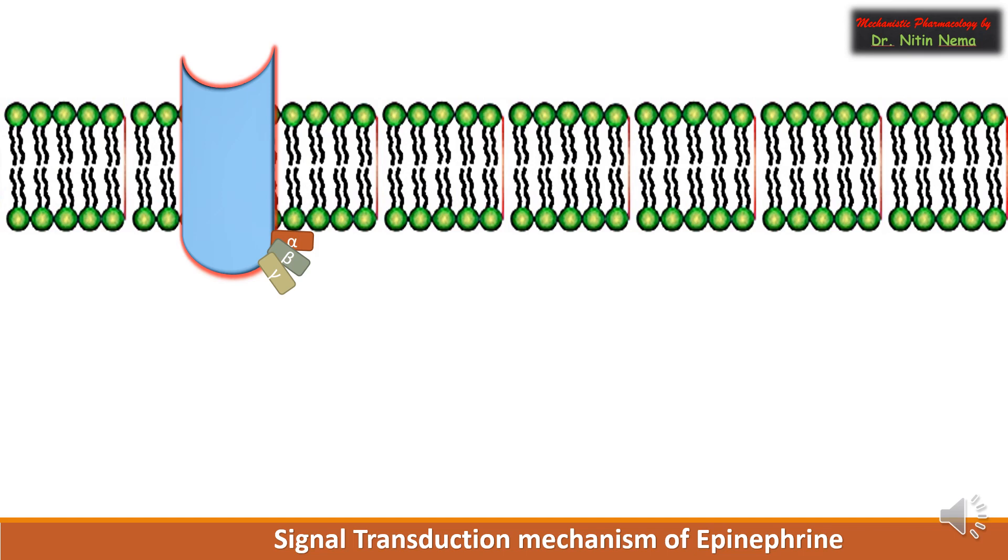At rest state it is associated with three subunits: alpha, beta, and gamma, which are anchored with each other through a fatty acid chain reaction called prenylation. Out of these three subunits, only alpha has GTPase activity.